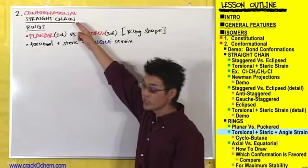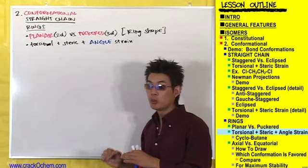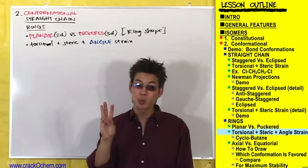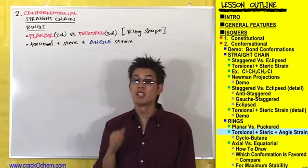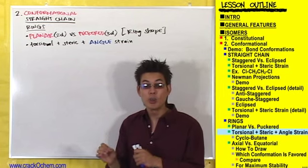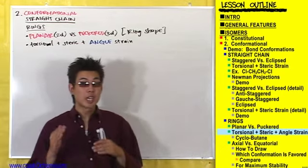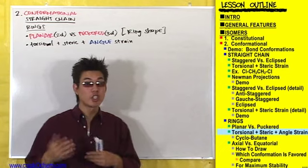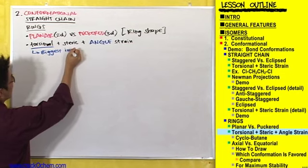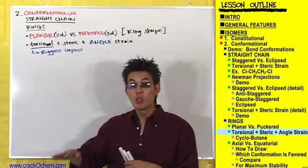Straight chain conformational isomers only dealt with torsional and steric strain, but ring conformational isomers deal with torsional, steric, and angle strain. The type of strain that has the biggest impact on a ring's shape is torsional strain. Therefore, a ring always favors the conformation with the lowest torsional strain.